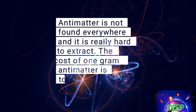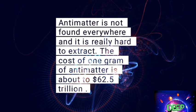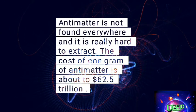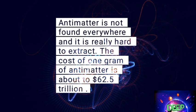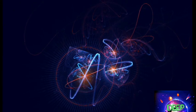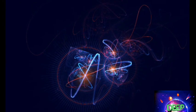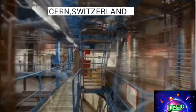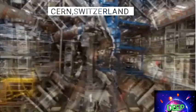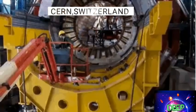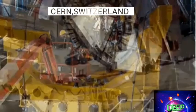The problem lies in the efficiency and cost of antimatter production and storage. Making just 1 gram of antimatter would require approximately 25 million billion kilowatt hours of energy and cost over a million billion dollars.